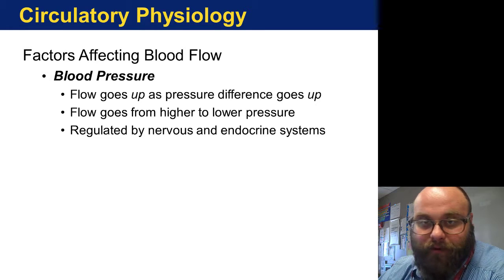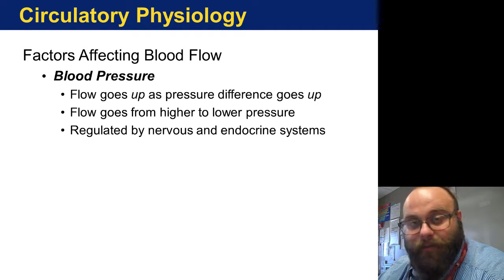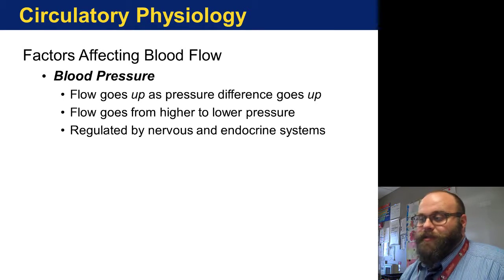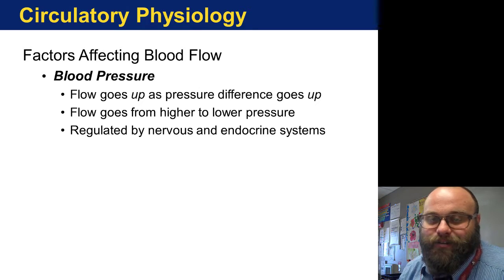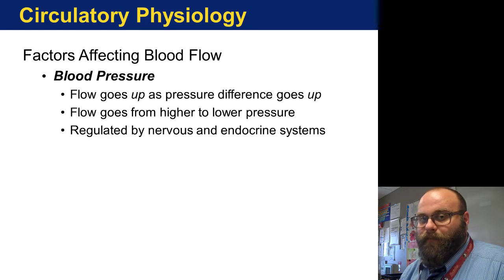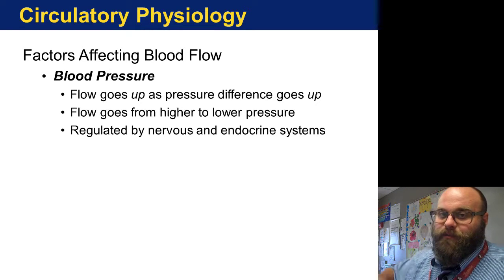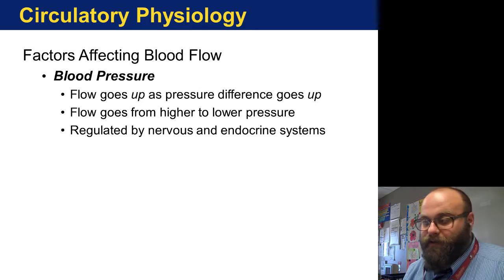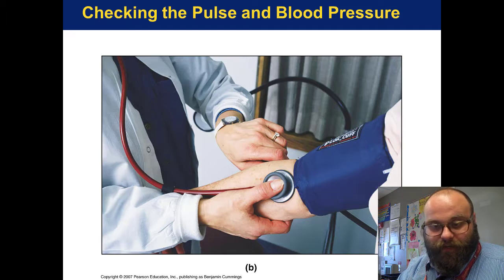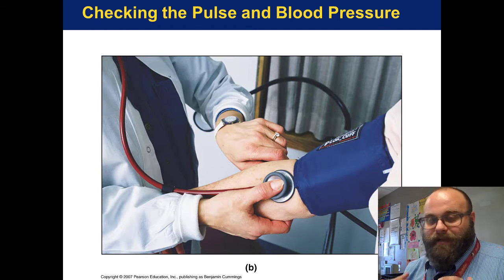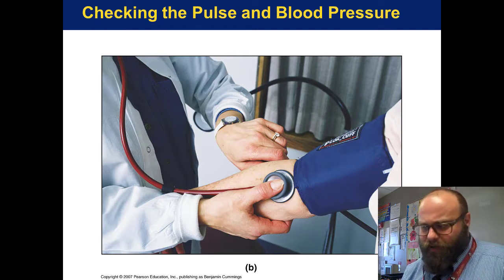Some things that can affect blood flow — one of the major ones is blood pressure. Blood pressure is a major factor in determining how and where blood is traveling. Blood pressure is low in some areas of your body and high in others, but there is an average measurement we can gather that helps determine mainly how effective your circulatory system is at doing its job. This is maintained by your nervous system as well as your endocrine system.